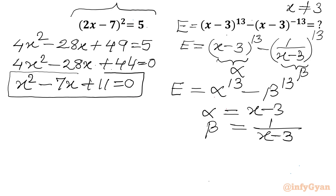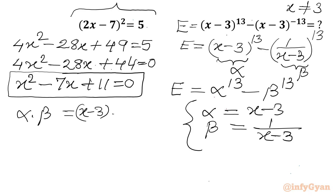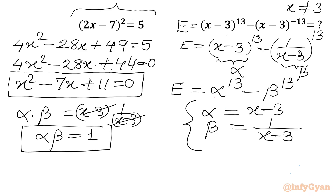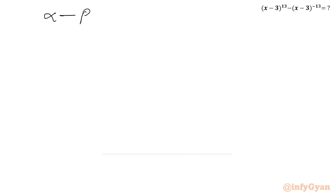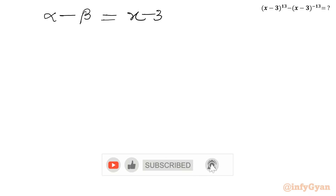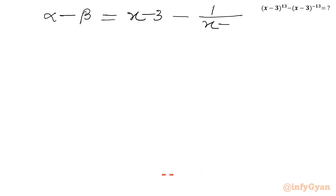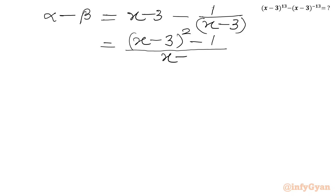Now we have α and β defined. Let us calculate α·β first. This equals (x-3) · 1/(x-3), and both terms cancel, giving us αβ = 1. Now I will calculate α - β. We write α - β = (x-3) - 1/(x-3), and taking the LCM gives [(x-3)² - 1] / (x-3).